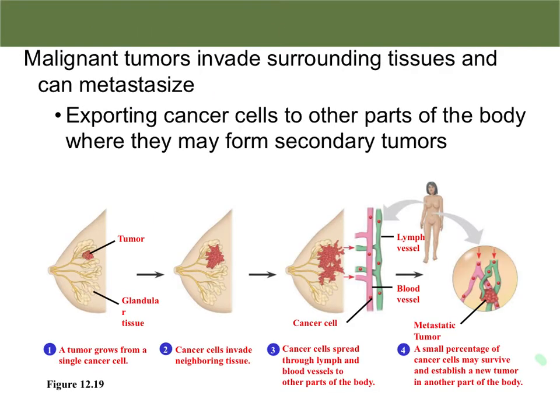Malignant tumors are tumors that invade surrounding tissues. Once this happens, they can also metastasize. When a cancer metastasizes, that means cancer cells are transported to other parts of the body where they may form secondary tumors.